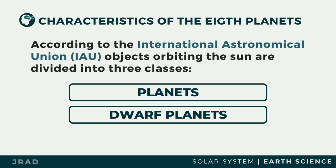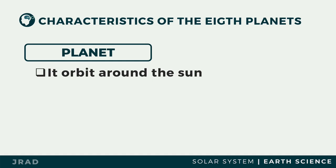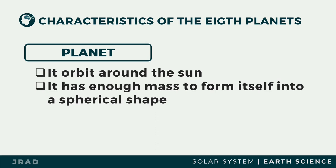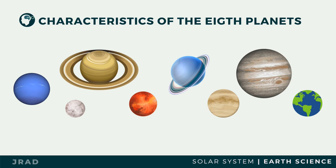According to the International Astronomical Union (IAU), objects orbiting around the Sun are divided into three classes: planets, dwarf planets, and small solar system bodies. To be classified as a planet, an object must orbit around the Sun, possess sufficient mass for its own gravity to make it nearly round in shape, and have cleared its immediate neighborhood of all smaller objects, making it the dominant gravitational body in its orbit.